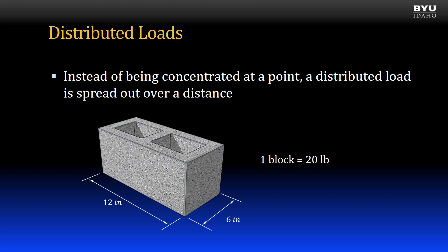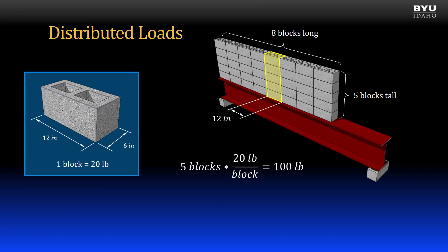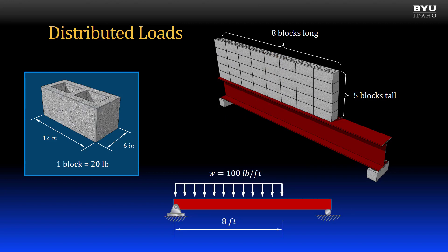Let's consider an example. Here is a concrete masonry block commonly used in building construction. Let's say that one 12-inch long block weighs 20 pounds. If we stacked blocks five tall and eight blocks long end-to-end, we would create a distributed loading condition on this beam. A single stack of blocks would weigh 100 pounds and occupies a 12-inch section of the beam length. So we could say that this distributed load has a magnitude of 100 pounds per foot oriented downward. The arrows show direction and the magnitude is 100 pounds per foot. A lowercase w is the notation often used for distributed loads.